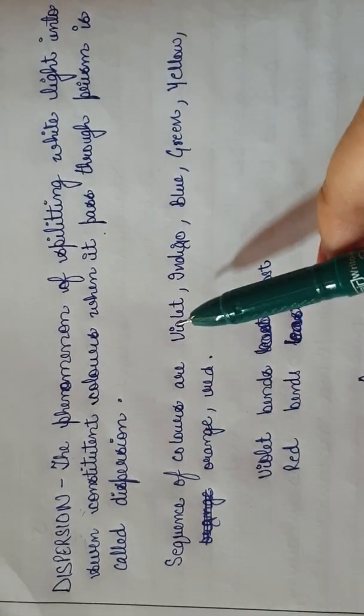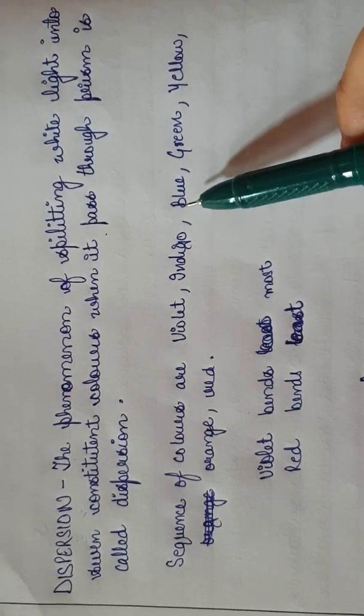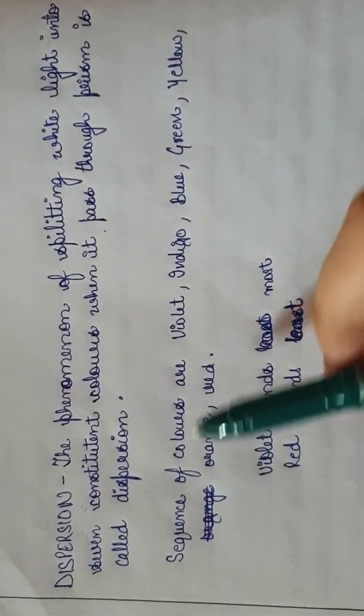What are the colors that are formed? Violet, Indigo, Blue, Green, Yellow, Orange, Red.